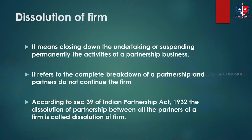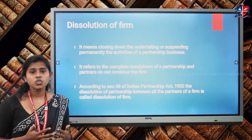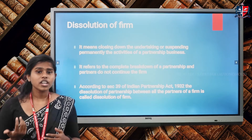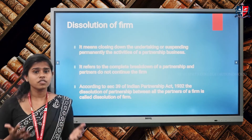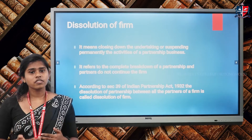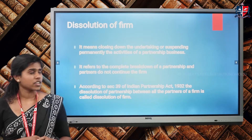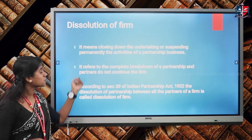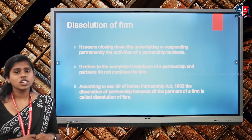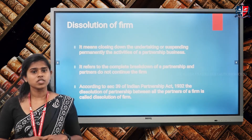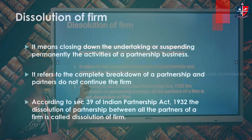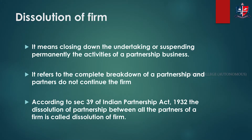Dissolution of firm is completely different from dissolution of partnership. The dissolution of firm is the complete closure or complete breakdown of a business — the business is no more continuing. According to Section 39 of the Indian Partnership Act of 1932, the dissolution of partnership between all the partners of a firm is called the dissolution of firm. It means completely or permanently closing all activities of business, and partners do not continue the firm.